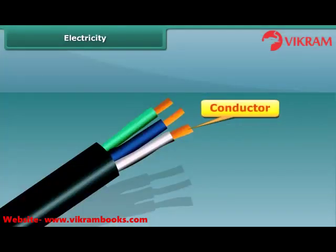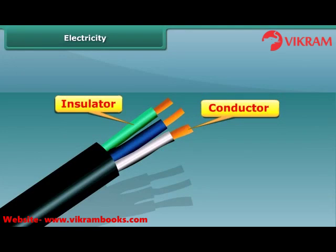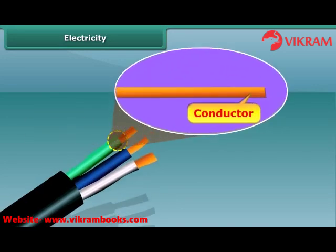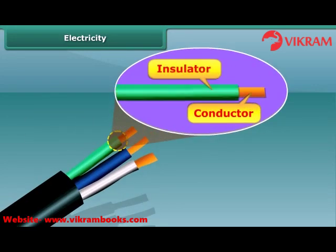Both conductors and insulators are important while using electricity. Conductors like copper or other metallic wires are used for electric supply, but at the same time these metallic wires are coated with insulating materials like plastic or rubber for safety.